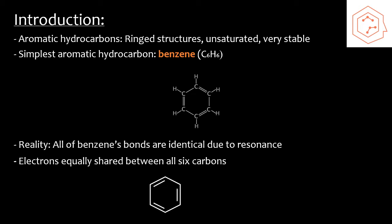In the first depiction, benzene is drawn as having three double bonds — it's just the line structure. In the second depiction, there's a circle in the middle of the hexagon ring, which represents that there's resonance in the structure and that those delocalized electrons are shared equally amongst all six carbons.